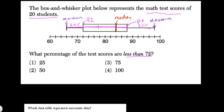They want to know what percentage of scores are less than 72. So let's find 72. Here's 70, here's 72. So this is your 72 mark, the first quartile.